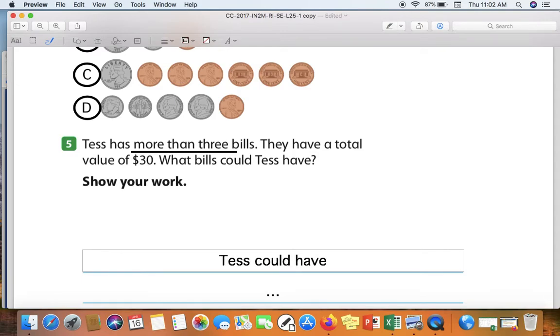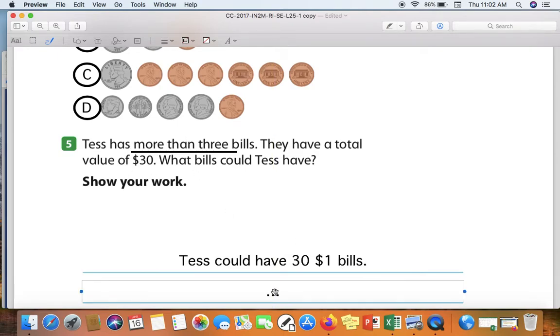Tess could have thirty one-dollar bills. That would mean that she would have thirty bills, which is more than three, and her total value would be thirty dollars. What if Tess had two five-dollar bills? That's ten dollars. And two ten-dollar bills. Altogether, that means that she would have four bills, which is more than three, and she would still have thirty dollars. Two tens is twenty, plus two fives is ten. Twenty plus ten makes thirty dollars.